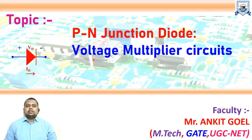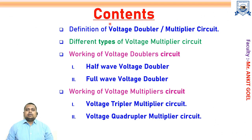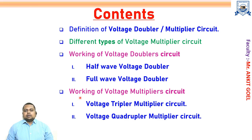Hello students, today we will learn the topic voltage multiplier circuits. In this session, we will cover the following contents. We will first understand the definition of the voltage doubler and the multiplier circuits. Then we study the different types like voltage tripler and voltage quadrupler. Then we will see the working of the voltage doubler circuit — there are two types: half wave voltage doubler and the full wave voltage doubler. Then we will learn the working of the voltage tripler multiplier circuit and the voltage quadrupler multiplier circuit.